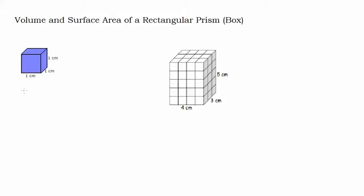We say the volume of this is one cubic centimeter, and this is how we measure volume. In geometry we write it as cm³ — that superscript three is attached to the centimeter, saying that it's a cubic centimeter. So if you pictured that you took some Play-Doh and made this perfect cube, you have one cubic centimeter of Play-Doh. You could roll that Play-Doh out into a worm or roll it into a ball, and it's still a cubic centimeter of Play-Doh.